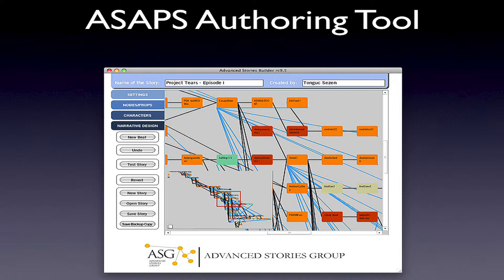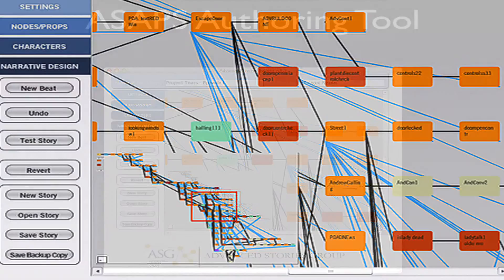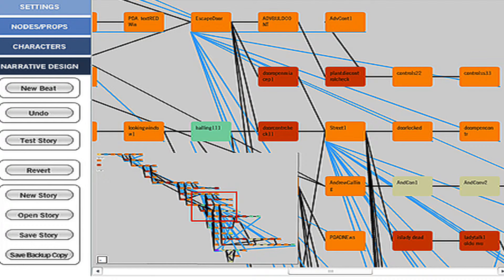ASAPS comes with a user-friendly, user-oriented offering tool, which creates graphical representations of the narratives. These representations look like the branching structure that we see here.